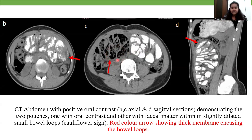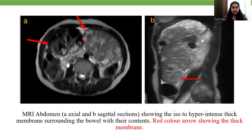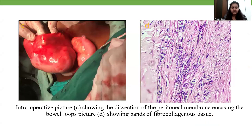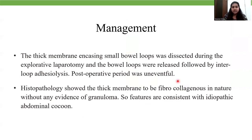A thick membrane encasing the bowel was identified. MRI abdomen showed an iso- to hyperintense thick membrane surrounding the bowel with their contacts. Intraoperative picture showed dissection of the peritoneal membrane encasing the bowel loops, and histopathological image showed bands of fibrocollagenous tissue. On management, the thick membrane encasing small bowel loops was detected during exploratory laparotomy and the bowel loops were released followed by inter-loop adhesiolysis. Histopathology showed the thick membrane to be fibrocollagenous in nature without any evidence of granuloma, so the features are consistent with idiopathic abdominal cocoon.